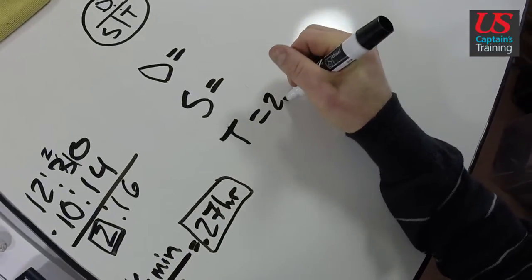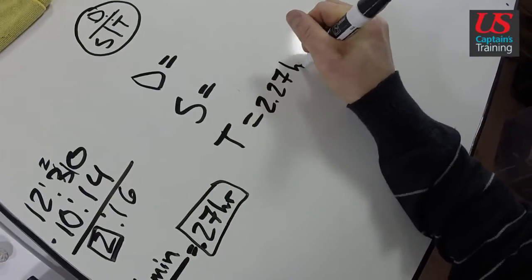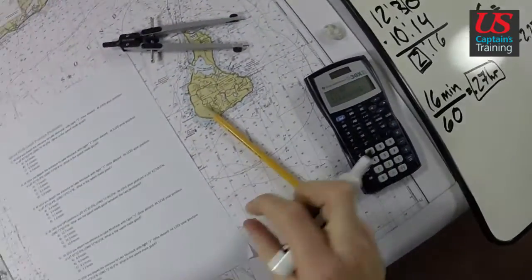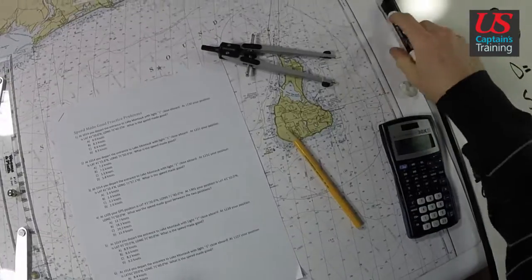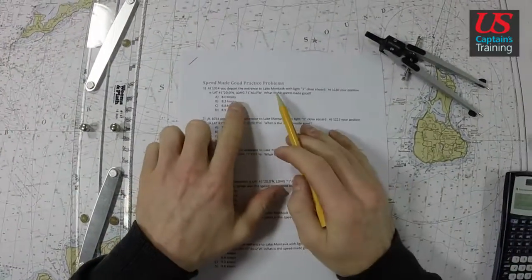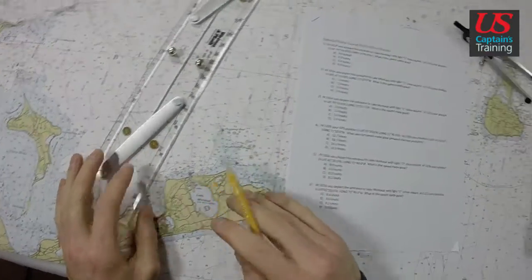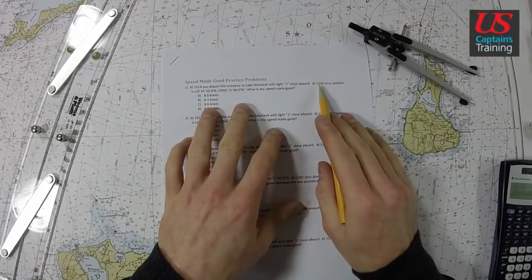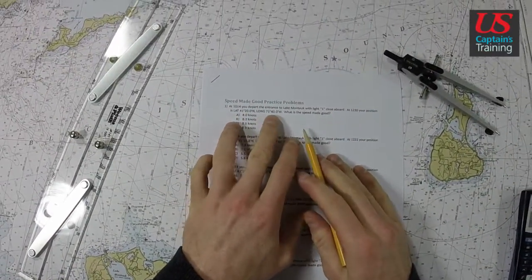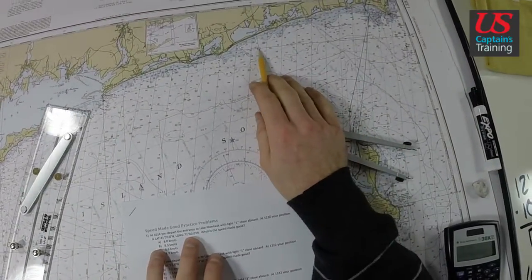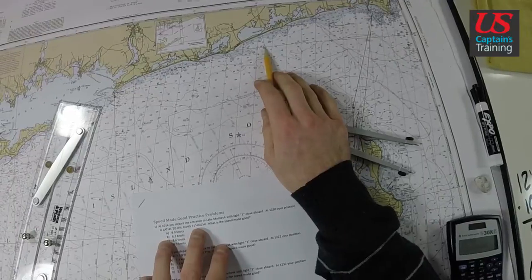Now we can get a distance off the chart. We're just going to find our starting point: Lake Montauk, light one close aboard. Good. At 1230 our position is 41°20', 71°40'. That happens to land right where a parallel and a meridian intersect.